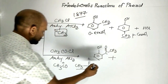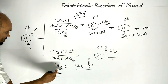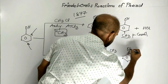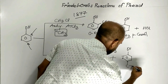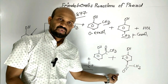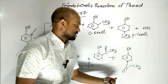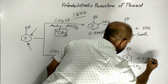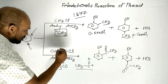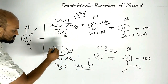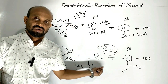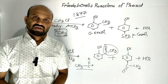Another product is formed when this electrophile attacks the para position — para-acetyl phenol. HCl is formed as a byproduct. In this reaction, addition of an acetyl group is happening, so this reaction is called Friedel-Crafts acylation reaction.